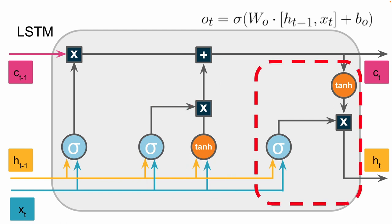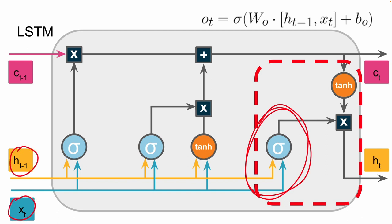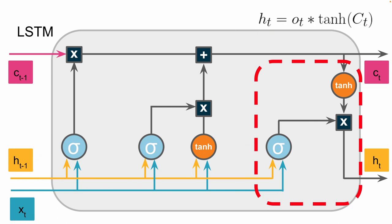Last but not least, we have an output node and an output gate. The output gate determines how much our updated cell state should affect our hidden state. Like the other gates, it takes in the previous hidden state and current inputs, combines them using weights and a bias, and sends them through a sigmoid activation function to squish values between 0 and 1. To update the hidden state, we take our now-updated cell state, send it through a hyperbolic tan activation function, and then multiply it by the results of the output gate — giving us our new hidden state.